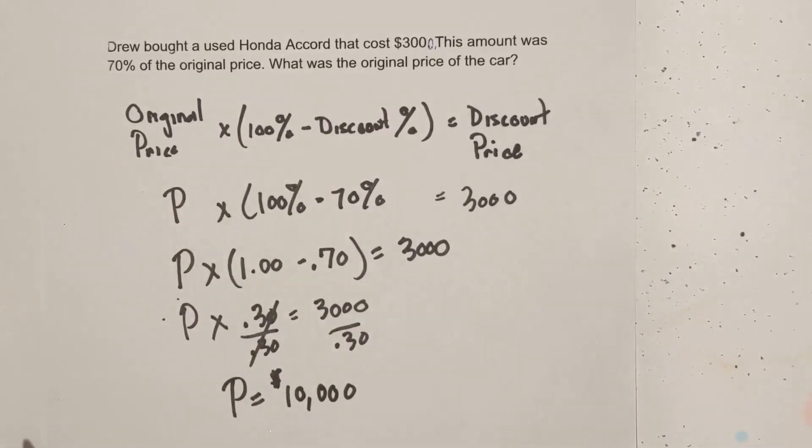So the original Honda Accord cost $10,000 and Drew bought it used for $3,000. It may have been a good deal. It may not. I guess it depends on what kind of shape the car is in. Let's work our final example.